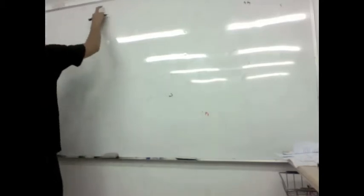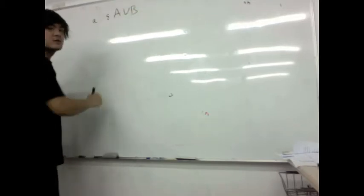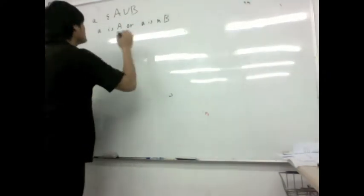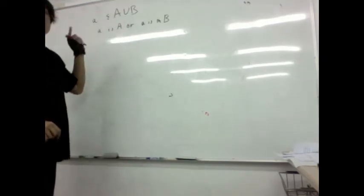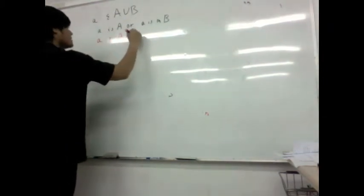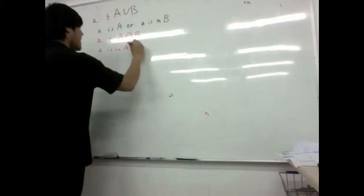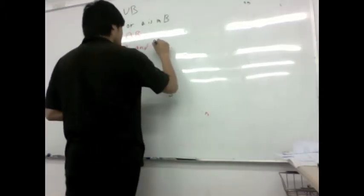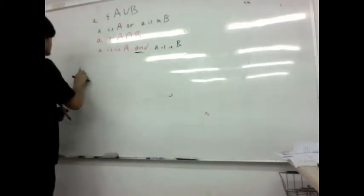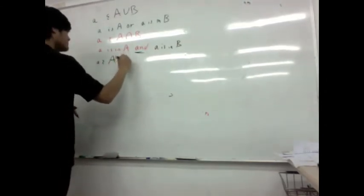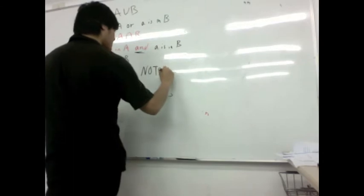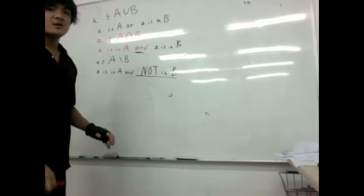So, talking about arbitrary elements: say, for example, x is in A union B. This means x is in A or x is in B. It's possible that it's only in A and not in B at all, but being in A union B means it has to be in one of these sets — one of two possibilities. Likewise, x in A intersection B means x is in A and x is in B. And lastly, x in A minus B means x is in A and not in B.